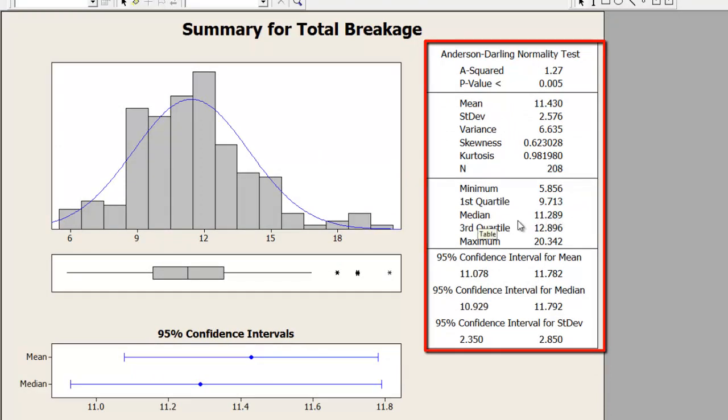So I am using median. The median breakage is currently at 11.289. Why did I pick up median? Because the p-value here is showing that the data is non-normally distributed. So mean will not be the best measure of central tendency, hence I am using median. The median breakage is currently at 11.289.